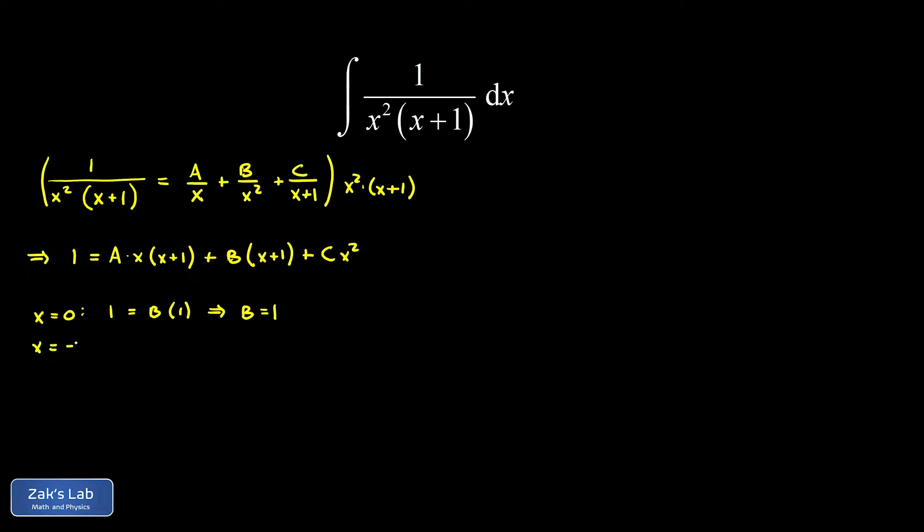Next, we're going to sub in x equals negative 1, which causes the a and b terms to vanish, leaving us with only the c term. We have 1 equals c times negative 1 squared, which is just 1. So we discovered that c equals 1 as well.